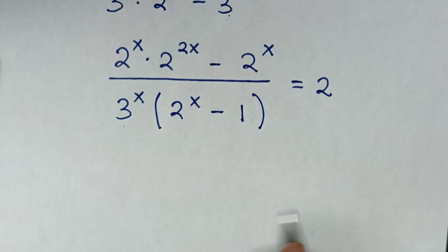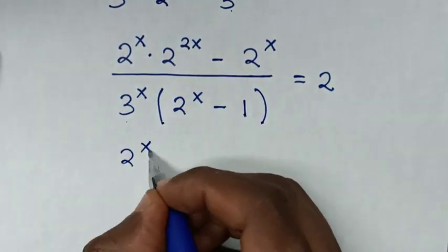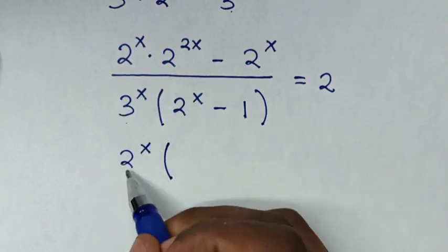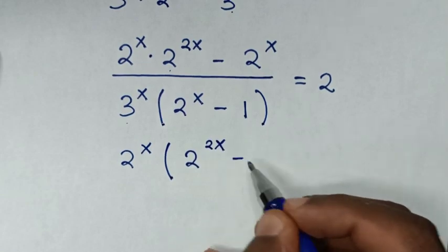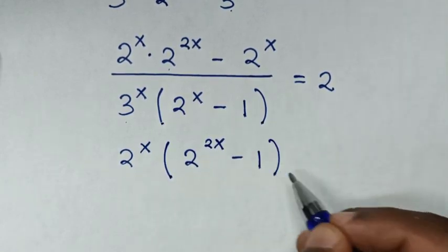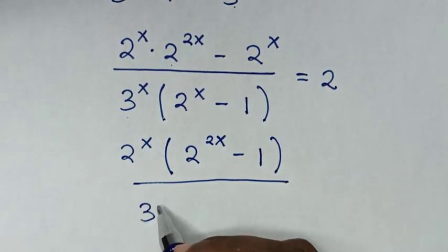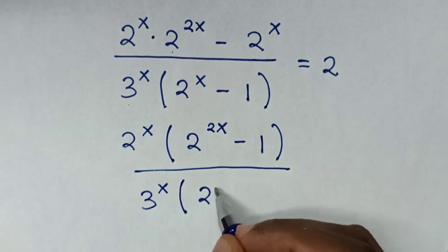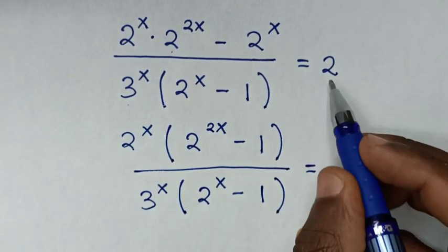In the numerator, 2^x is common, so we take 2^x out of the bracket: 2^x times (2^(2x) minus 1), all over 3^x times (2^x minus 1), equals 2.